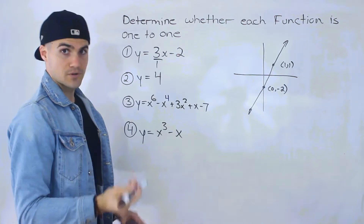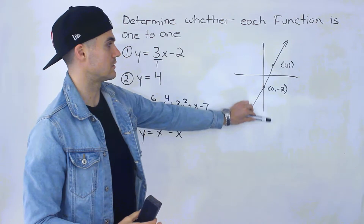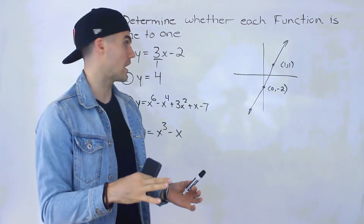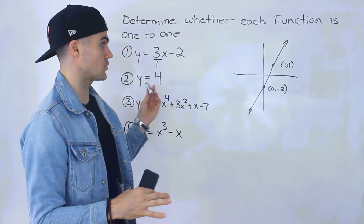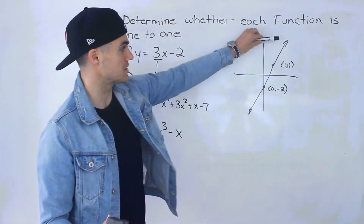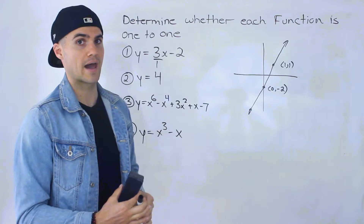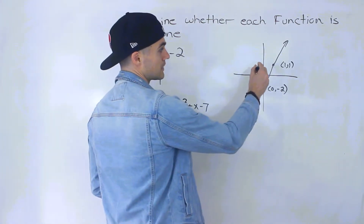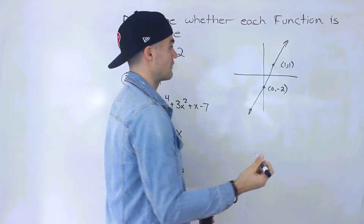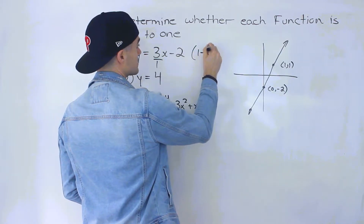If we run a horizontal line through this, it's going to pass the horizontal line test. In fact, all lines besides a horizontal line are one-to-one functions because they always pass the horizontal line test — there are never two points touching, meaning there are never multiple x values for a single y value. So y equals 3x minus 2 is one-to-one.